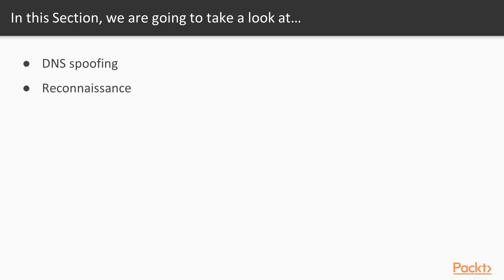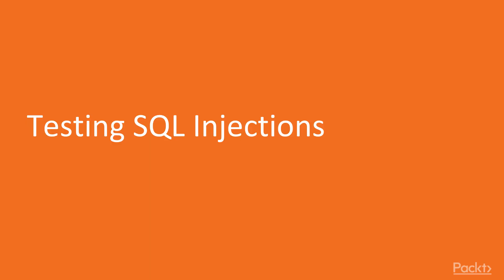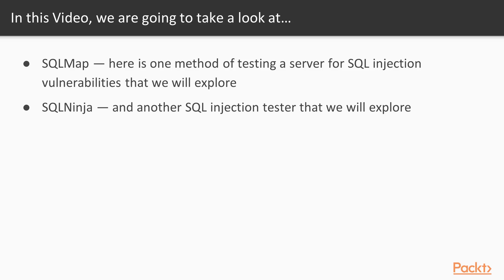In this video we're testing SQL injections. We're going to use two different methods. SQL map is one of the methods we'll use to test for an SQL injection vulnerability, and then we'll use SQL ninja to basically inject if we find anything. We can double-check SQL injection vulnerabilities and then use SQL ninja to throw an SQL injection at our server.